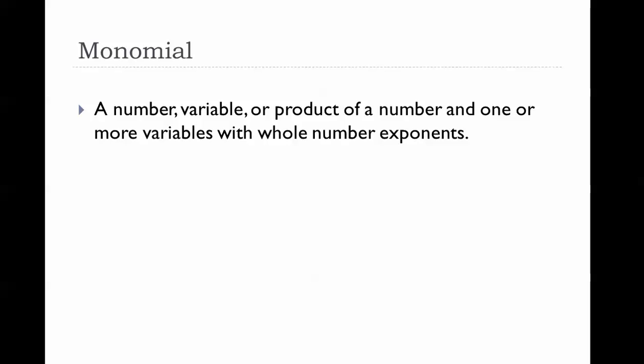In order to talk about polynomials, we first need to talk about monomials. A monomial is one name, or one term. It is a number, a variable, or a product of a number and one or more variables with whole number exponents. Let's pay attention to that definition as we look at some examples.